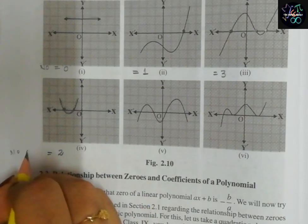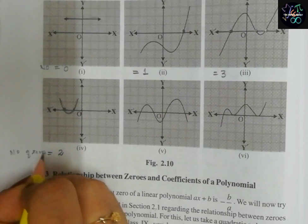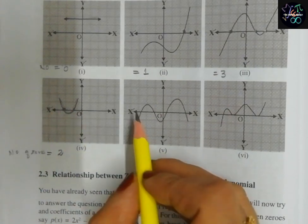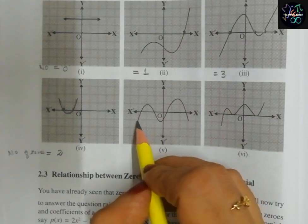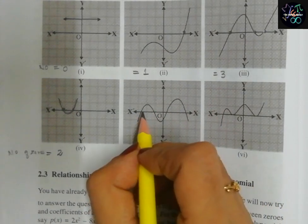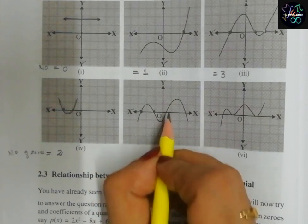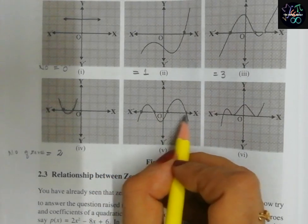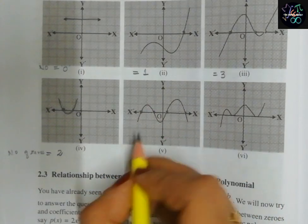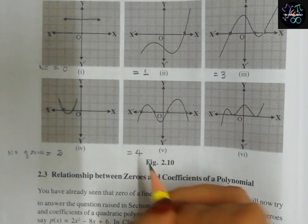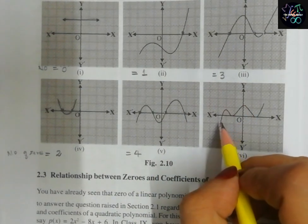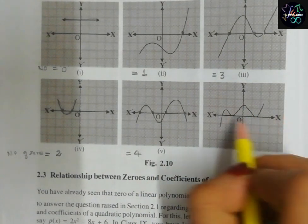To find the number of zeros, we check how many points the graph intersects the x-axis. In this fifth graph, the graphical line intersects the x-axis at one, two, three, four points. So the number of zeros is equal to four.